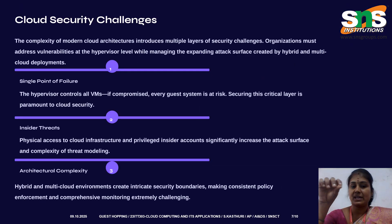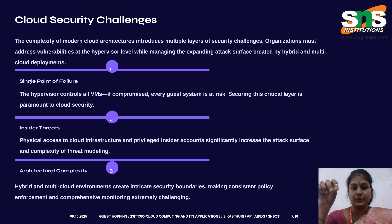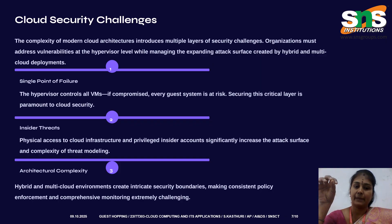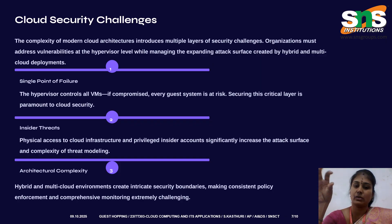Cloud security challenges: the cloud is a skyscraper built on trust, but three cracks can bring it down. First, a single point of failure — if the hypervisor is breached, every tenant is exposed. Second, insider threats — cloud admin misuse or physical data center access can worsen the risks. Third, architectural complexity — hybrid and multicloud setups create confusing, overlapping security boundaries. In 2024, Capital One revamped its cloud architecture after an insider-related misconfiguration led to exposure of over 100 million records in AWS.